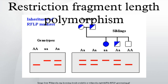Once a disease gene was localized, RFLP analysis of other families could reveal who was at risk for the disease, or who was likely to be a carrier of the mutant genes. RFLP analysis was also the basis for early methods of genetic fingerprinting, useful in the identification of samples retrieved from crime scenes, in the determination of paternity, and in the characterization of genetic diversity or breeding patterns in animal populations.